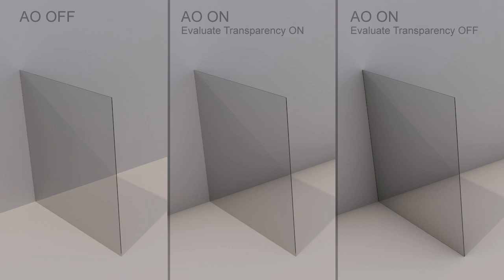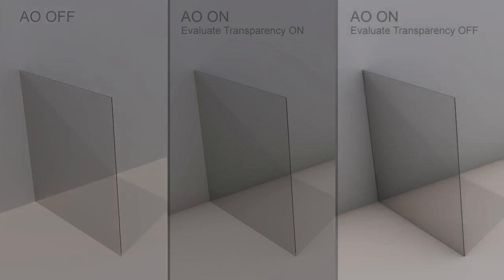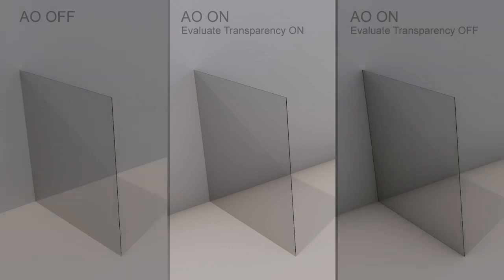On the left image, Ambient Occlusion is turned off. On the right image, Ambient Occlusion is turned on, but the Evaluate Transparency option is left off. When the glass surface receives the amount of light as in this case, the effect of Ambient Occlusion is obviously too strong compared to the shadow on the floor behind the glass. On the middle image, however, the balance of the shadows is perfect because the Evaluate Transparency option is turned on.